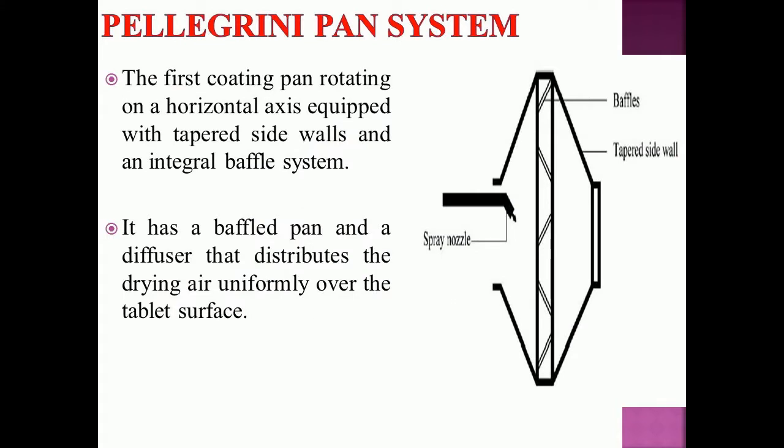The Pellegrini pan system was the first coating pan rotating on a horizontal axis equipped with tapered side walls and an integral baffle system. It has a baffle pan and a diffuser that distributes the drying air uniformly over the tablet surface.